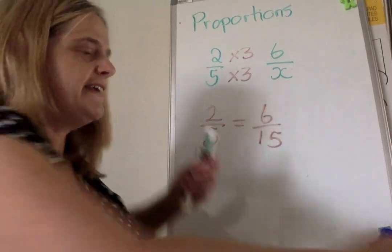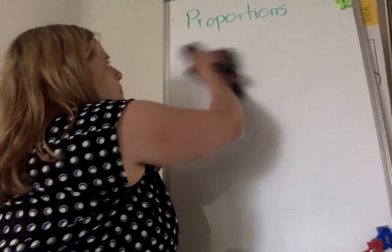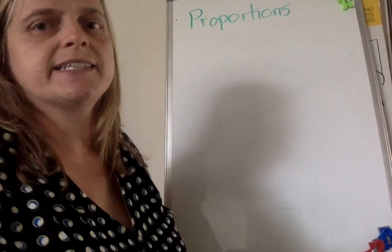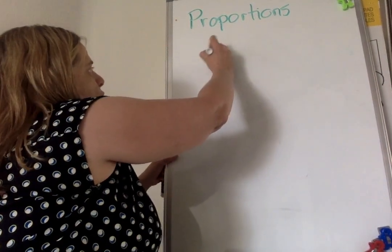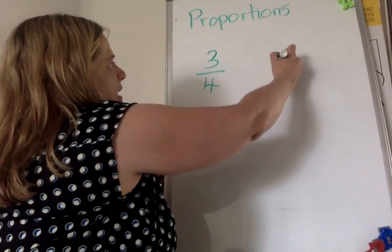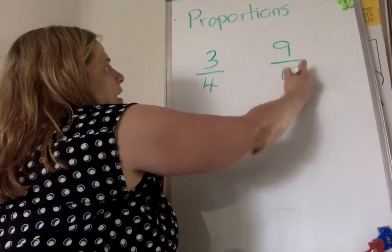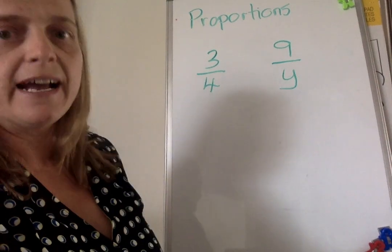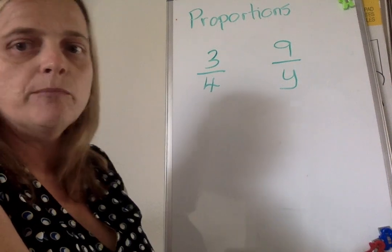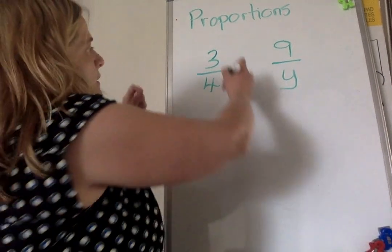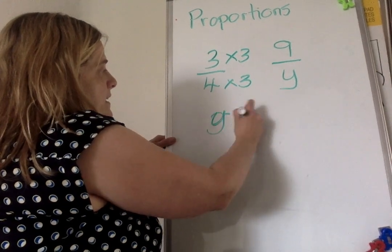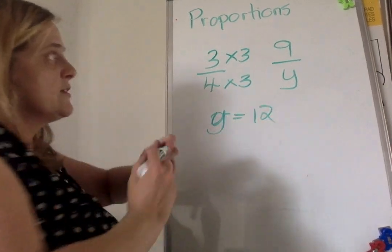That's all we're doing today: solving for that missing number. Here's another one. Imagine the proportion is 3 over 4 is the same as 9 over y. We're asking the question, what did you do to 3 to make it become 9? You multiplied it by 3. Therefore, what you do to one side of the equation you do to the other, and y is 12. So 3 over 4 is the same as 9 over 12.